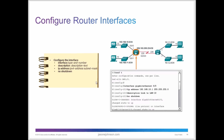When configuring interfaces using 'configure terminal', you'll configure interfaces such as Gigabit Ethernet G0/0, G0/1, or serial interfaces like S0/0. You can set the correct IP addressing on those interfaces and run 'no shutdown' to bring them up, because router interfaces are administratively down by default and must be explicitly enabled to pass traffic.